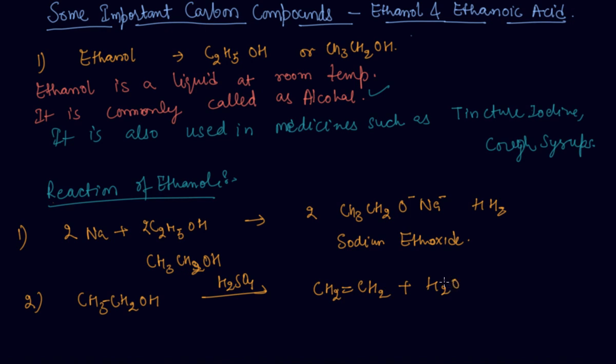The concentrated sulfuric acid can be regarded as a dehydrating agent. So it is dehydrating the oxygen from this and making it as ethene, from ethanol to ethene in presence of sulfuric acid.